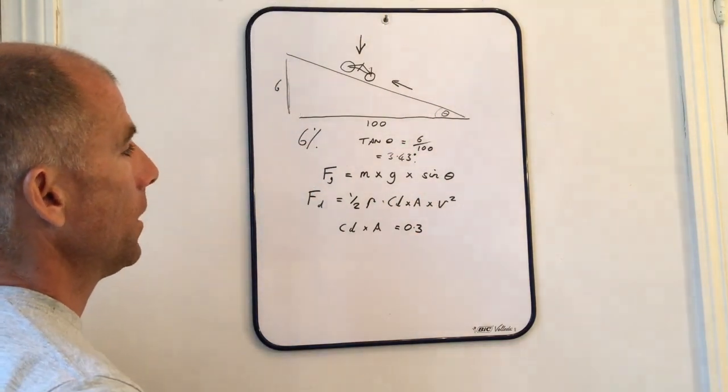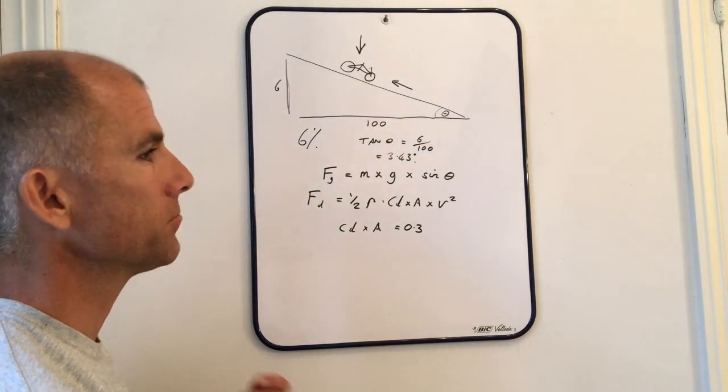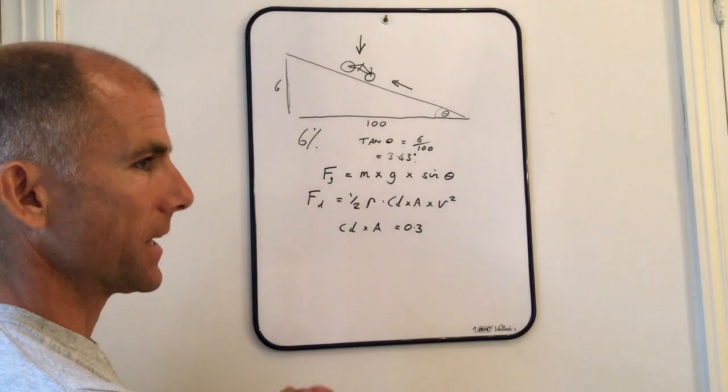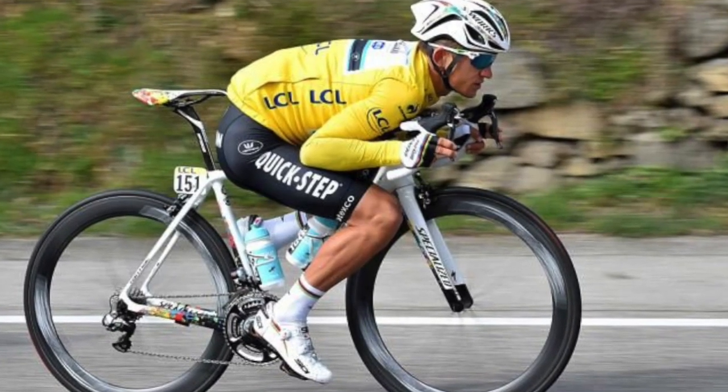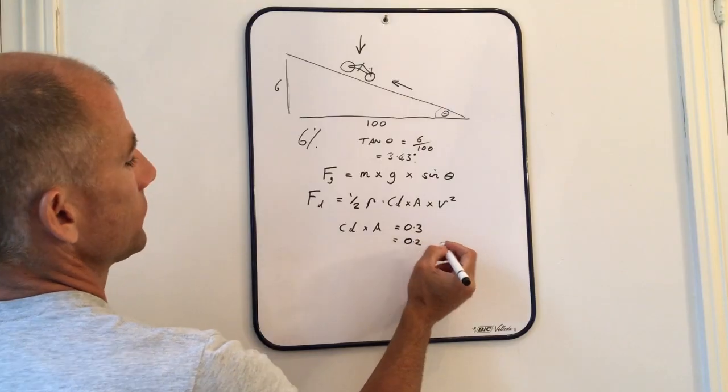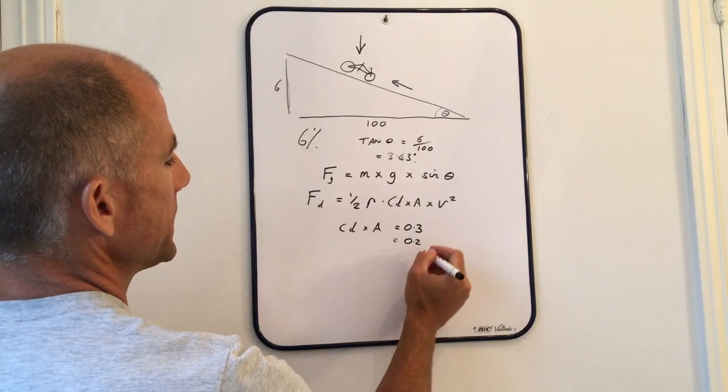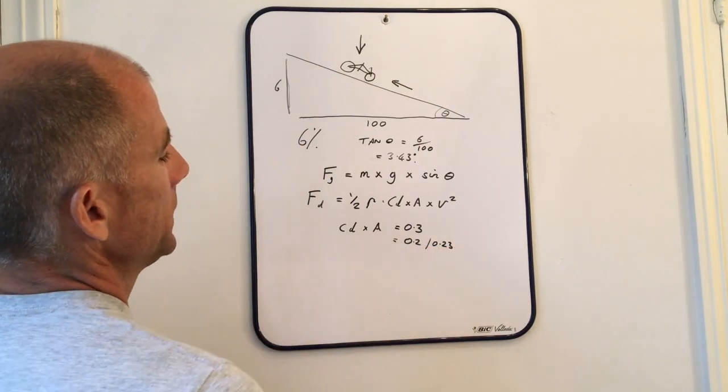It's generally accepted that a good aero position in the drops is approximately 0.3. And if you are getting into a really super aero tuck, getting right down, chest on the stem, tucking your knees and elbows in, you're really getting as streamlined as possible, you're going to be down potentially as low as 0.2, but perhaps more realistically something like 0.23.